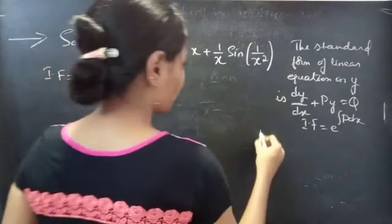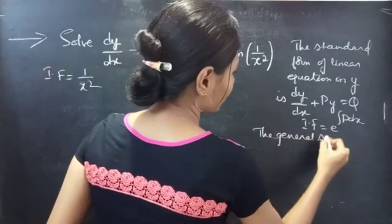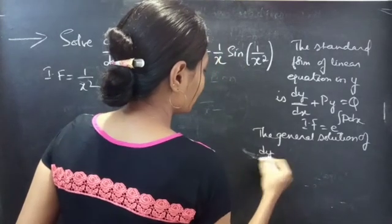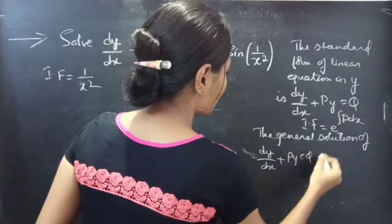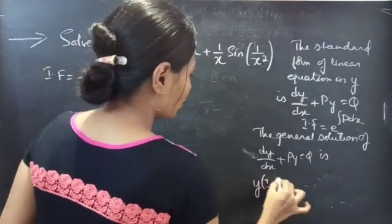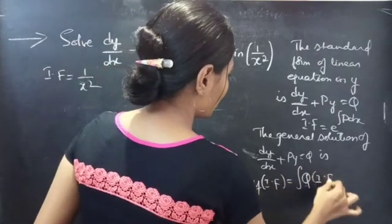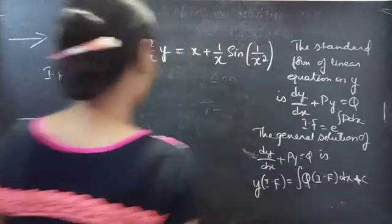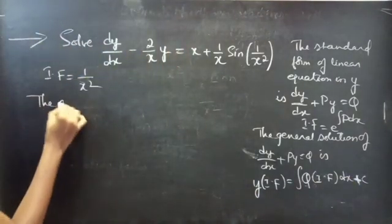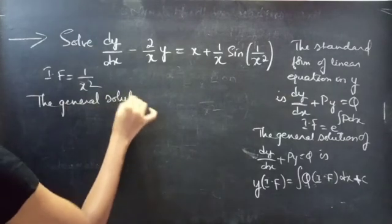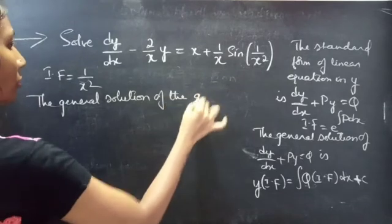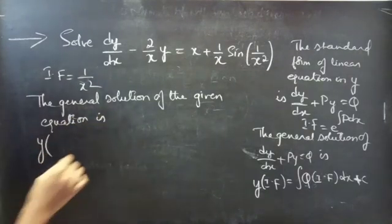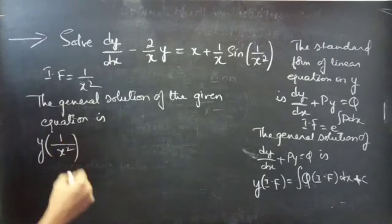Now we need to find the general solution to the given equation. We know that the general solution of a linear equation in y — that is dy/dx plus P·y equals Q — is given by y times the integrating factor equals the integral of Q times the integrating factor dx plus C.